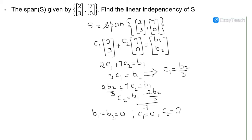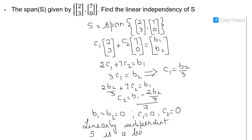Since the only solution is C1 = 0, C2 = 0, we can say that S is a linearly independent set — it has only the trivial solution. We can also say that S is a basis in the two-dimensional space R².